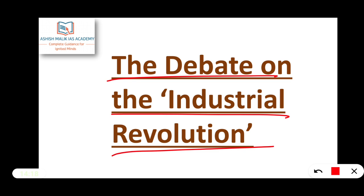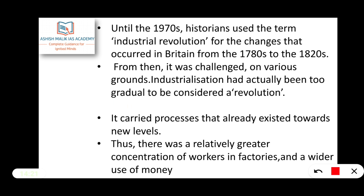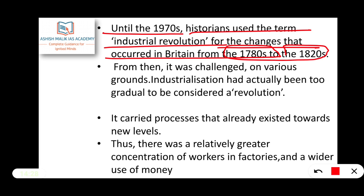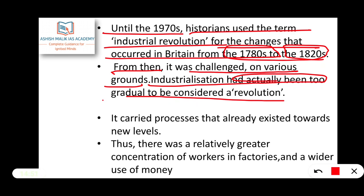Now please see the debate on the Industrial Revolution — pros and cons. Until the 1970s, historians used the term 'Industrial Revolution' for the changes that occurred in Britain from the 1780s to the 1820s — a period of about 40 years. From then it was challenged on various grounds: industrialization had actually been too gradual to be considered a revolution.